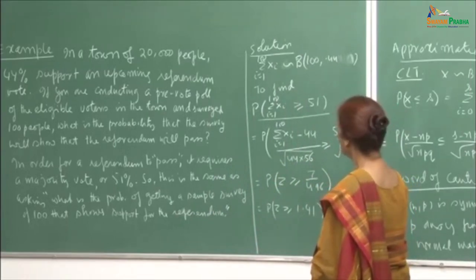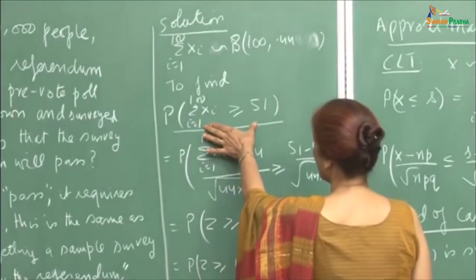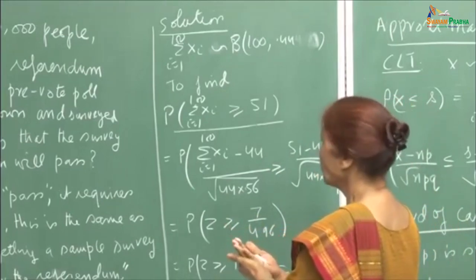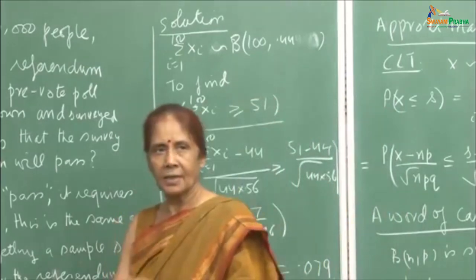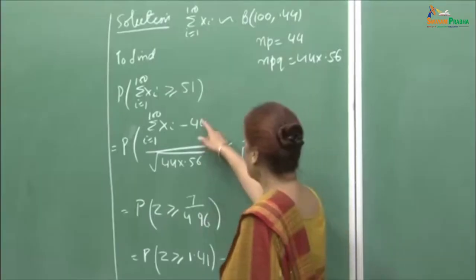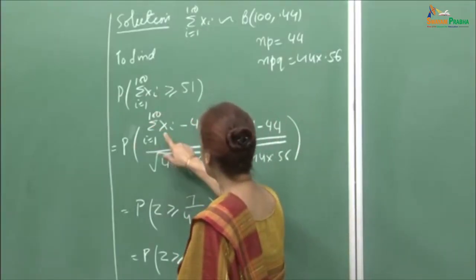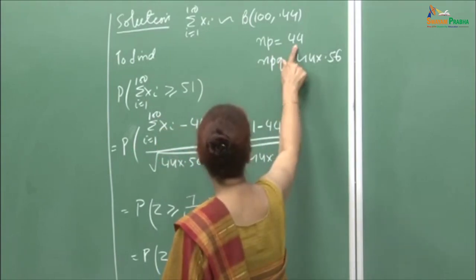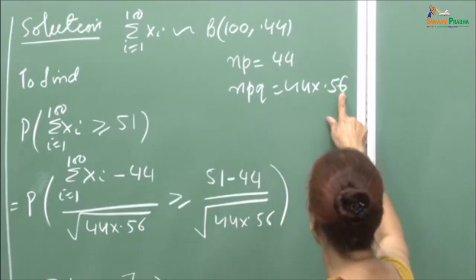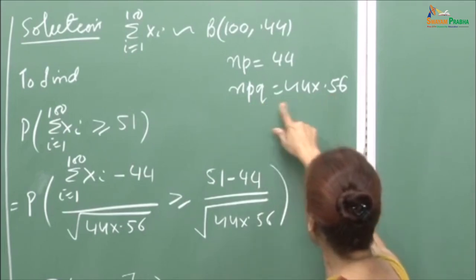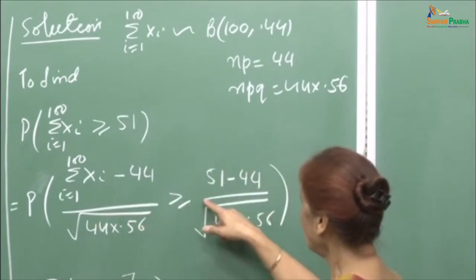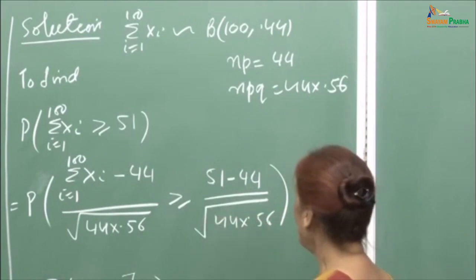Standardizing this variate: (ΣXᵢ − 44) / √(44 × 0.56), where p = 0.44 and q = 0.56, so the variance is npq = 44 × 0.56. This probability equals P(Z ≥ (51 − 44) / √(44 × 0.56)).